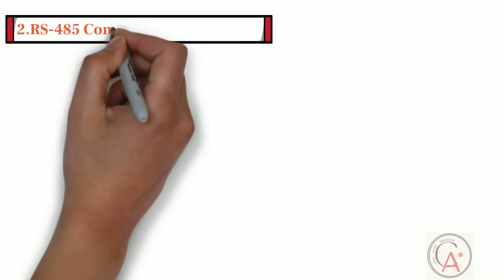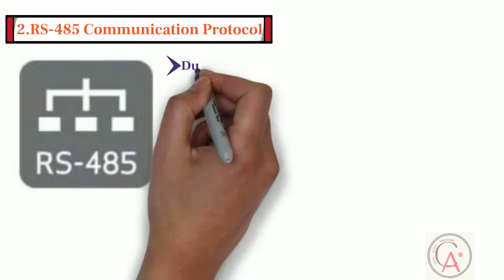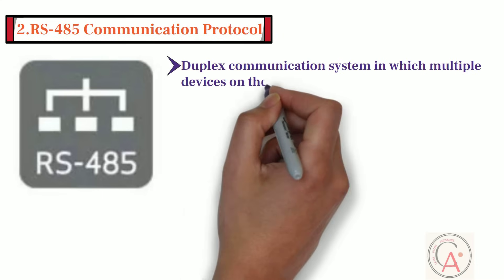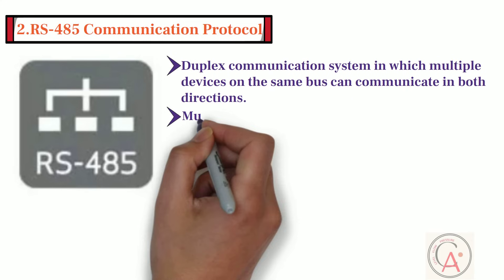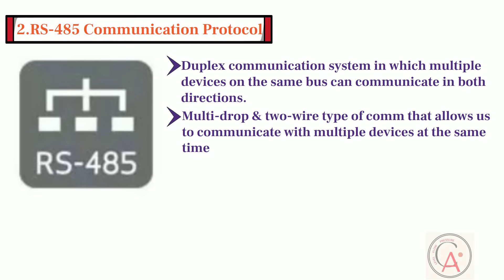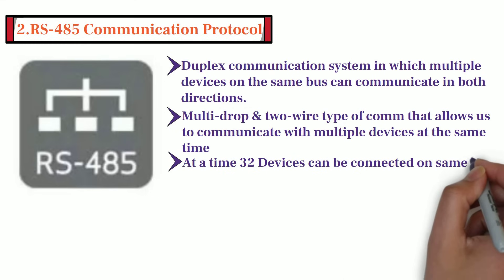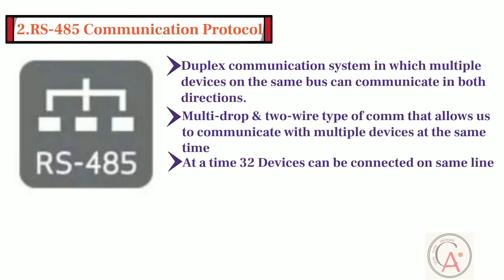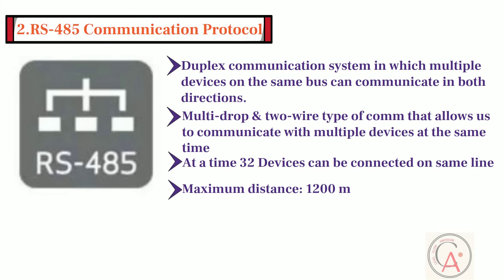Now let's learn about the RS-485 communication protocol. RS-485 is a duplex communication system in which multiple devices on the same bus can communicate in both directions. In other words, RS-485 is a multi-drop, two-wire type of communication that allows us to communicate with multiple devices at the same time. The main difference between RS-232 and RS-485 is that up to 32 transmitter-receiver pairs may be present on the line at one time on RS-485, and a 120-ohm resistor must be used to terminate the main line. It is used in serial communication up to 1,200 meters with 100 kilobits per second speed.